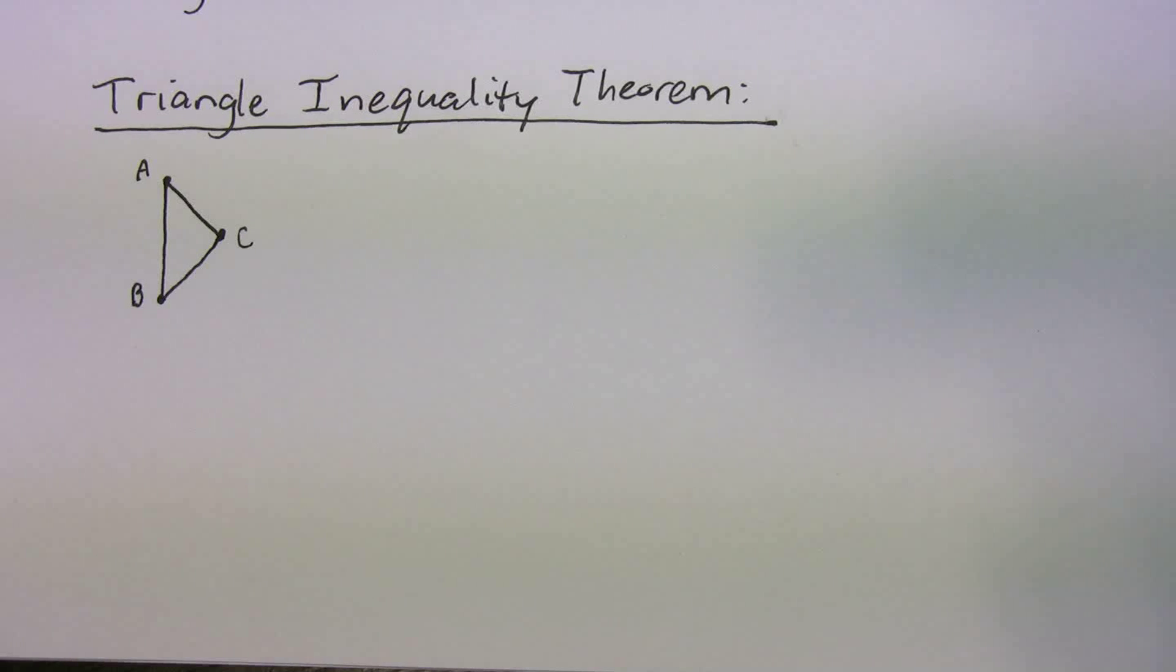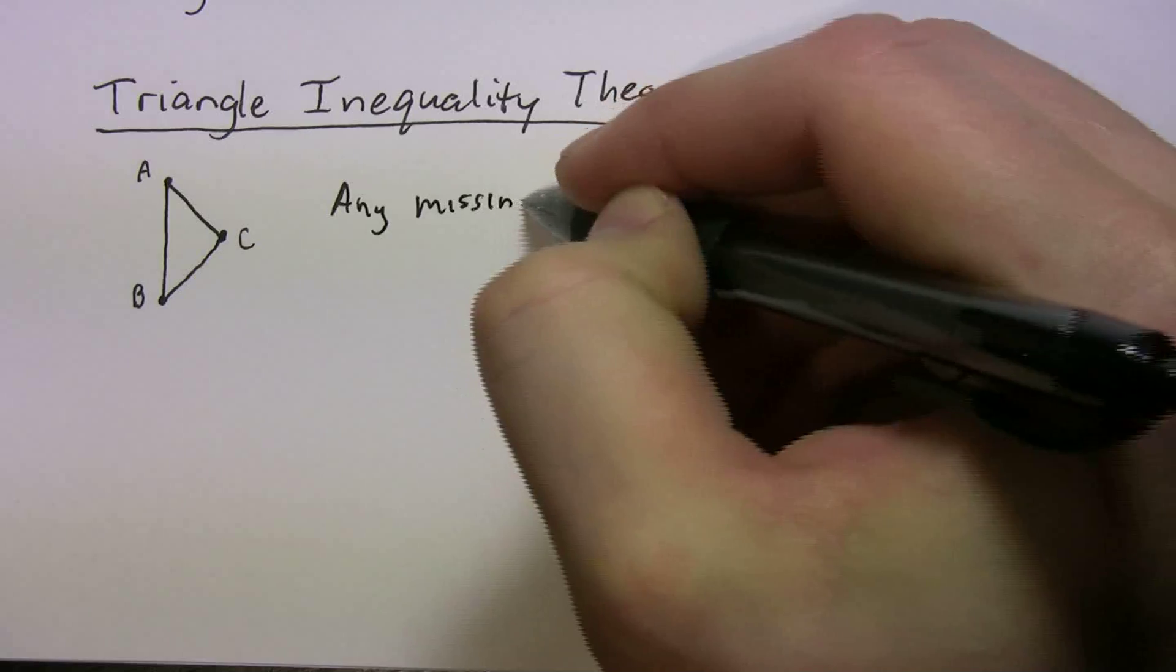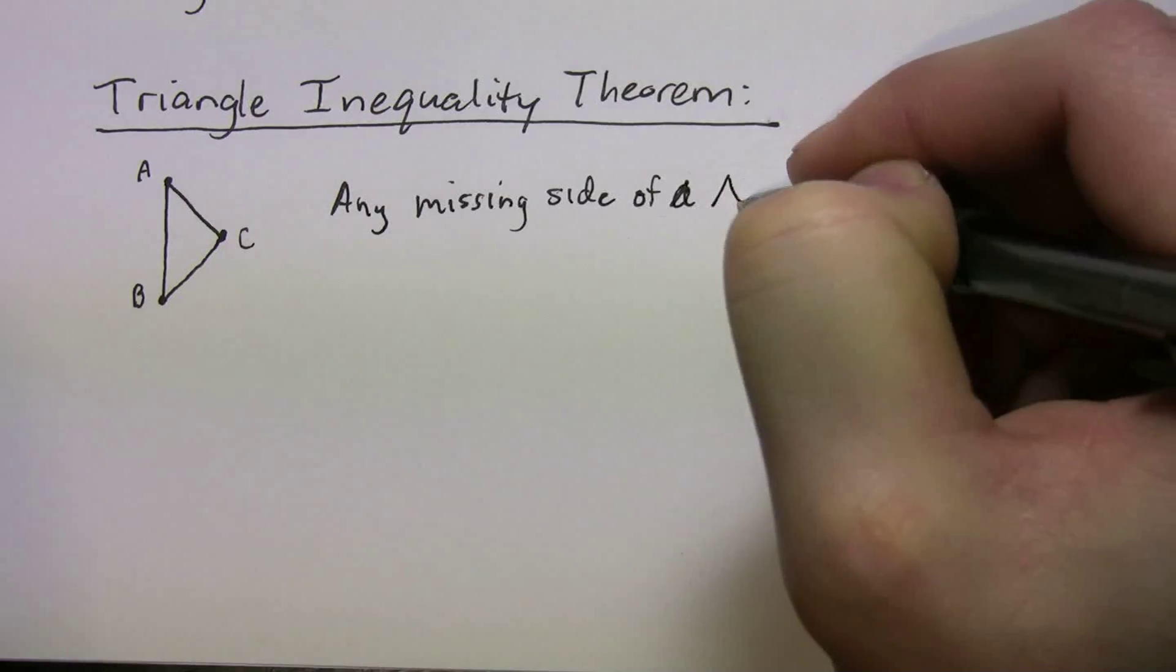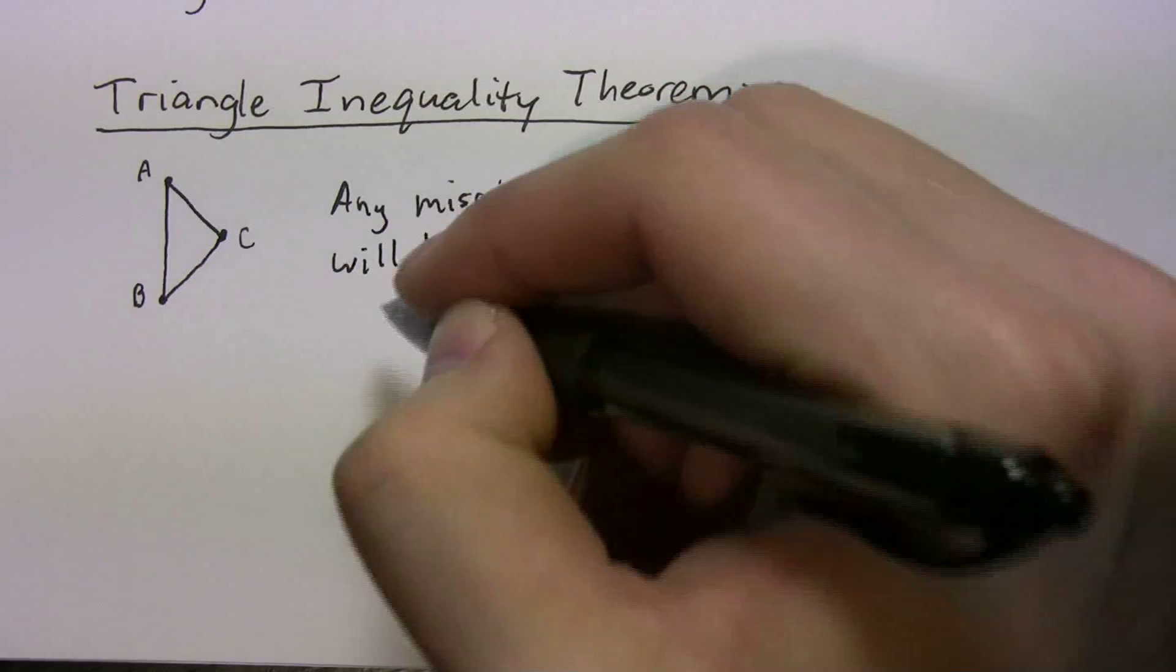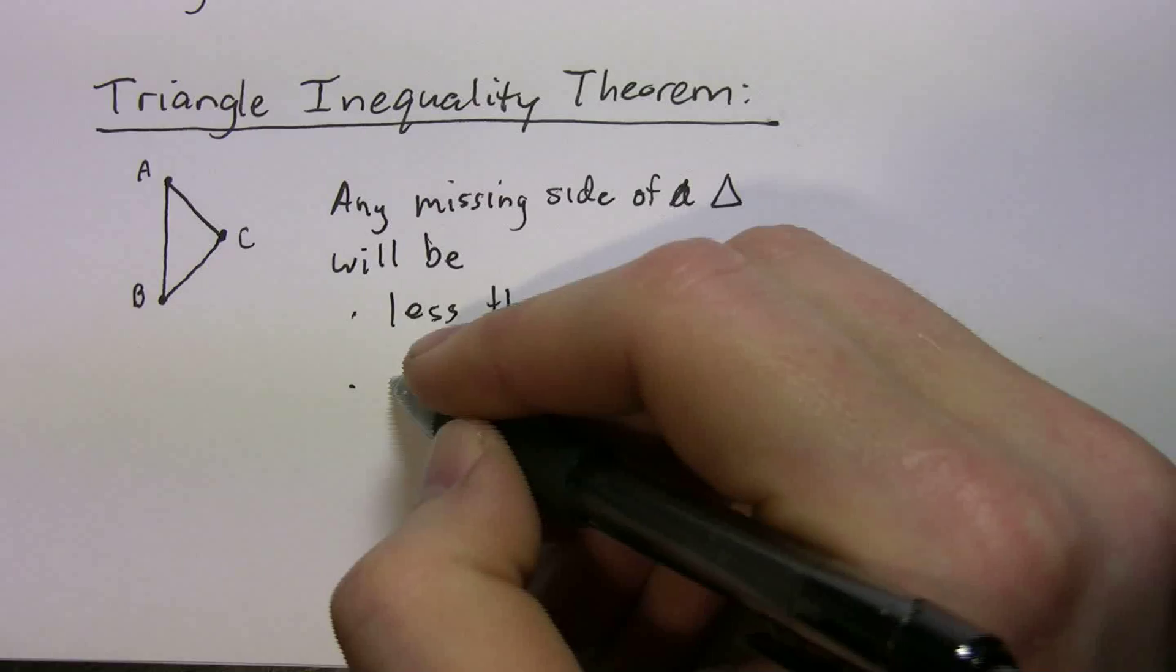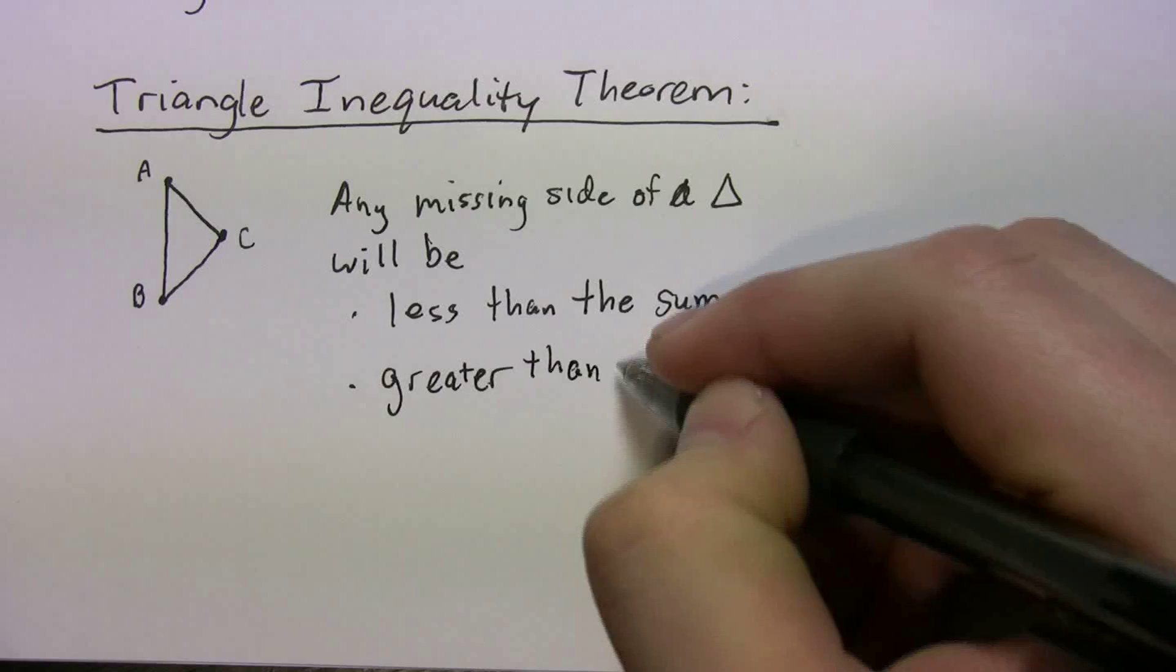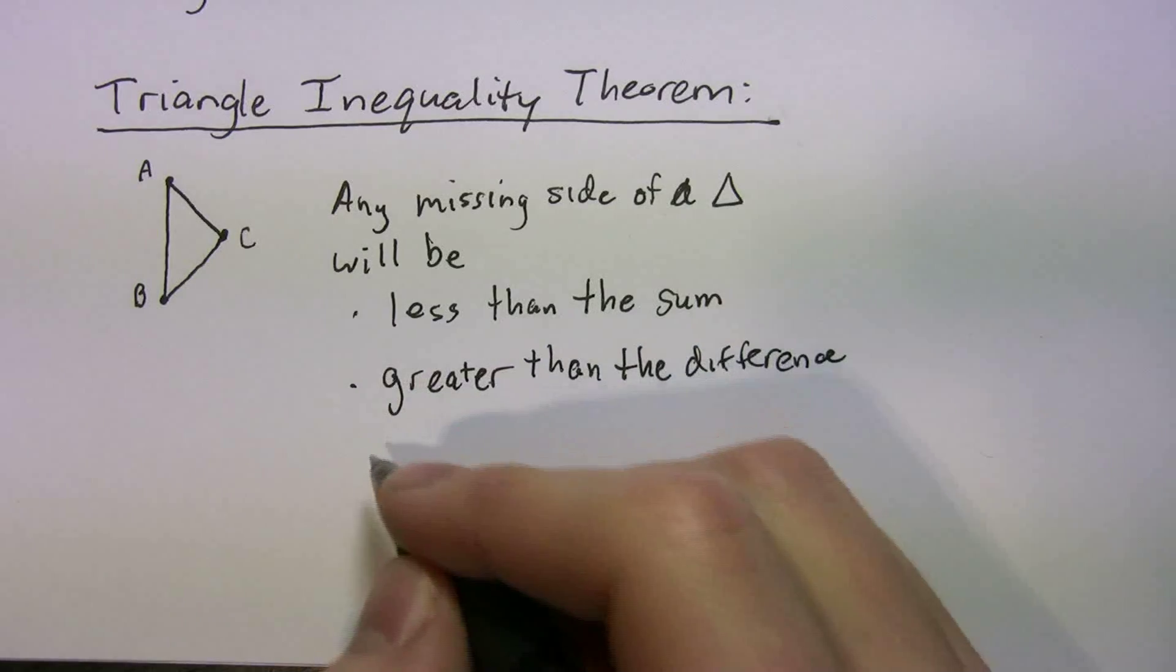So just to summarize, and I'm going to write it down for you so that's helpful on test day. What you should remember is that any missing side of a triangle will be, so here's the two points you want to remember, less than the sum, and greater than the difference of the other two sides.